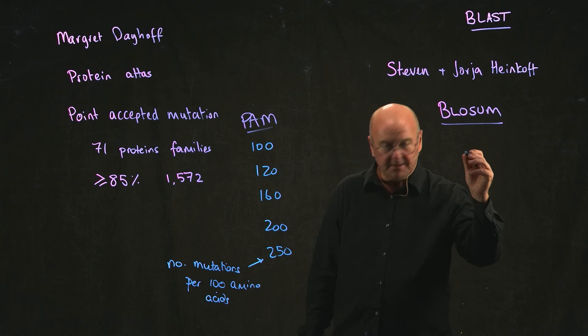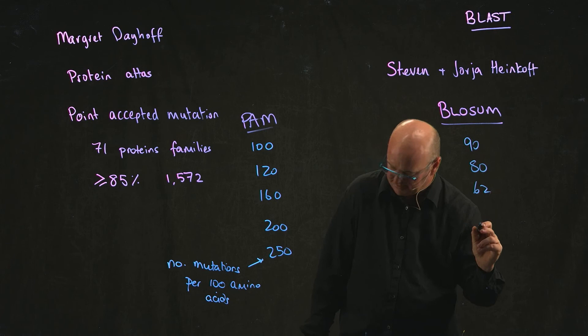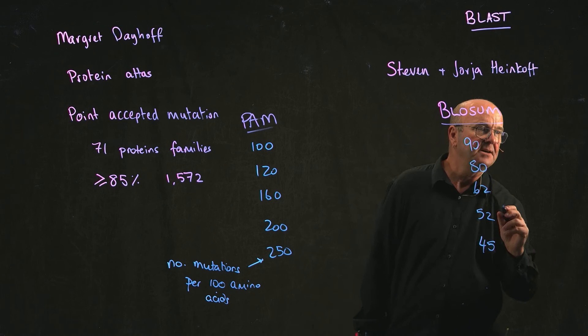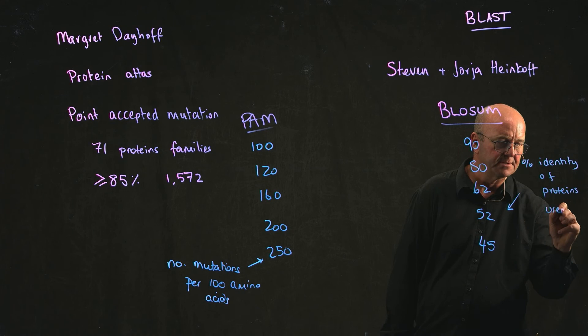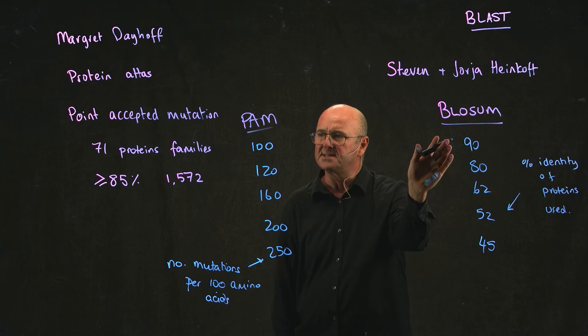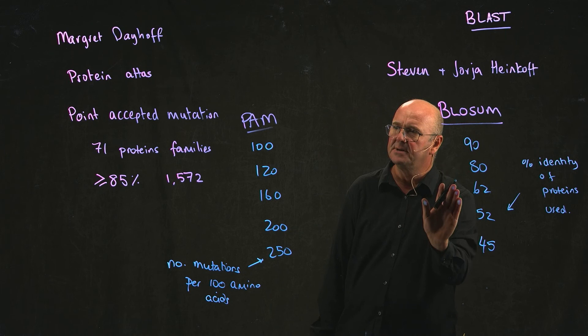And then in Blossom, a very typical range of Blossom matrices would be somewhere around this range. The numbers here are the percent identity of the proteins used. So the proteins that make up the Blossom 90 matrix were at least 90 percent identical. The proteins that make up the Blossom 80 matrix were at least 80 percent identical.